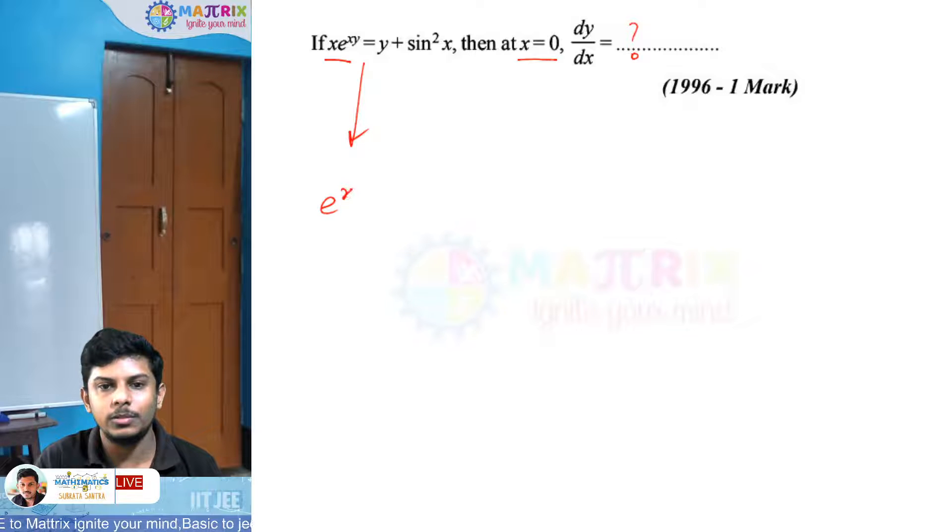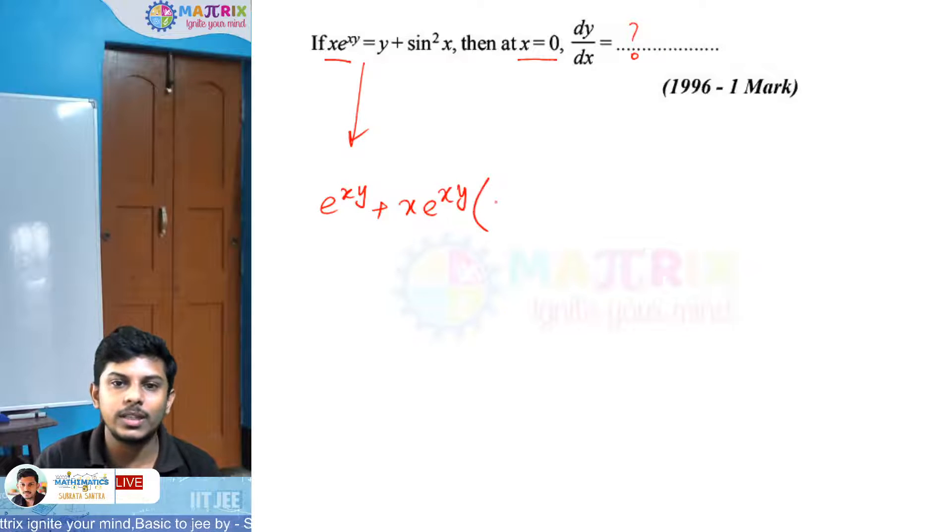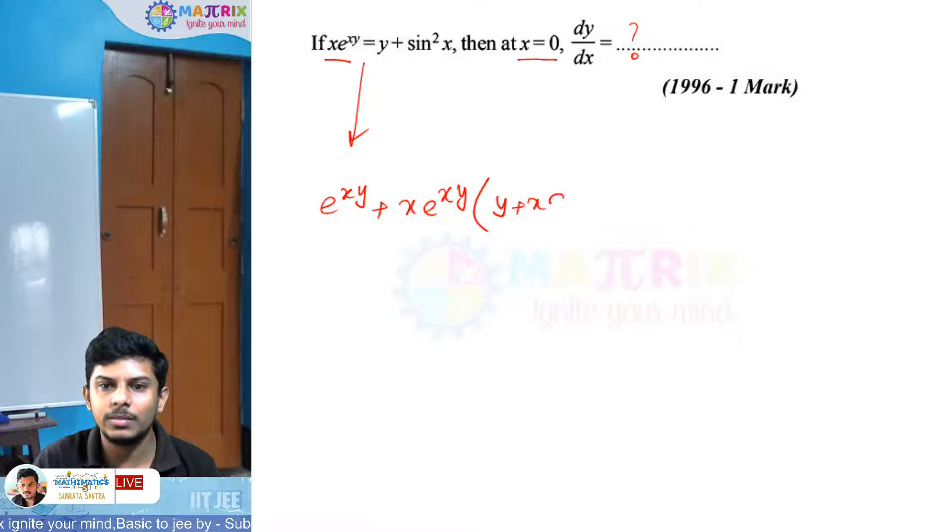Let's differentiate with respect to x. The left side gives us e to the power xy plus x times e to the power xy. For e to the power xy differentiation, we get y plus x dy by dx, as we know.